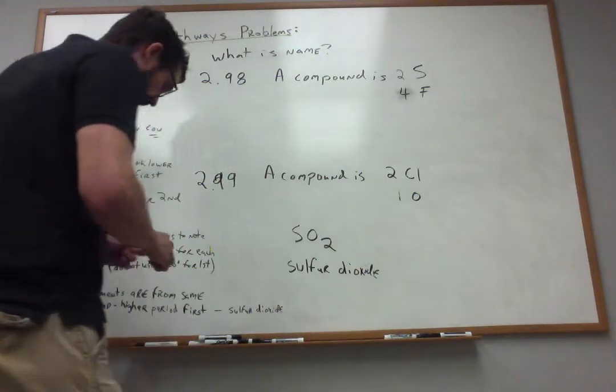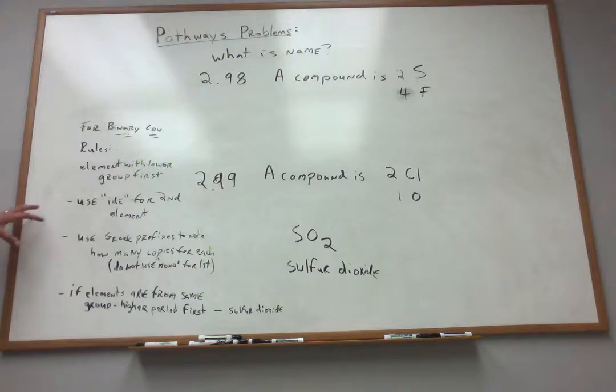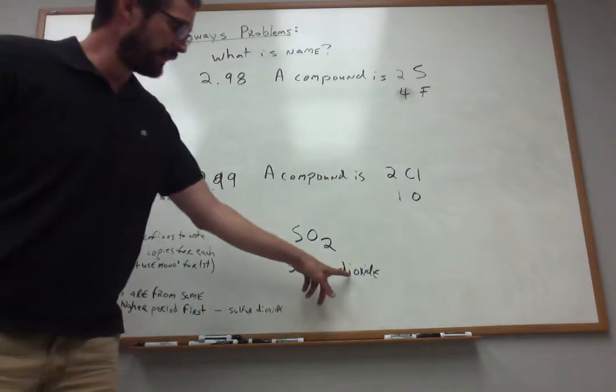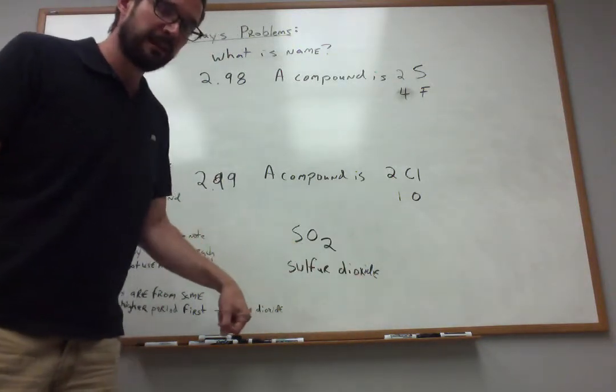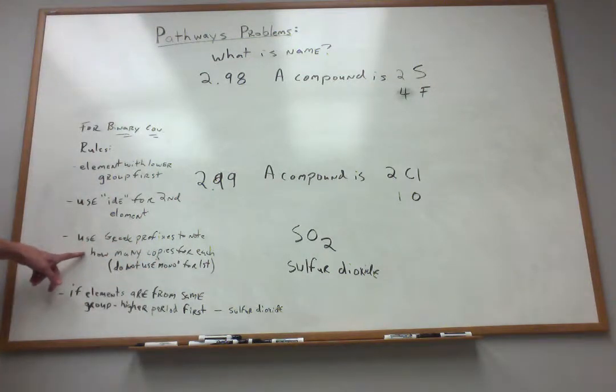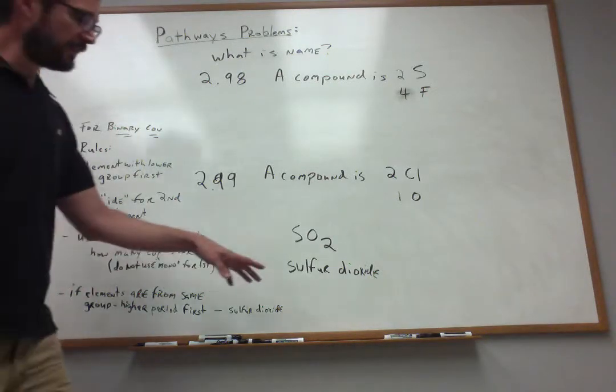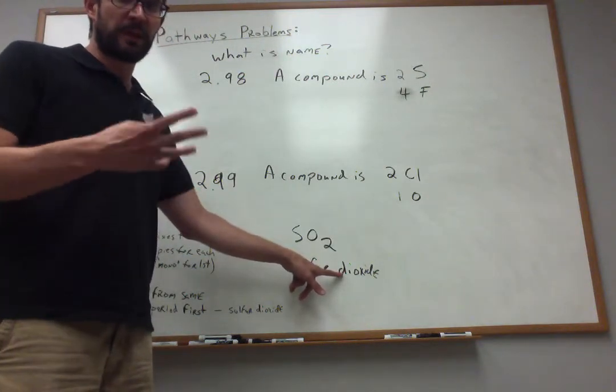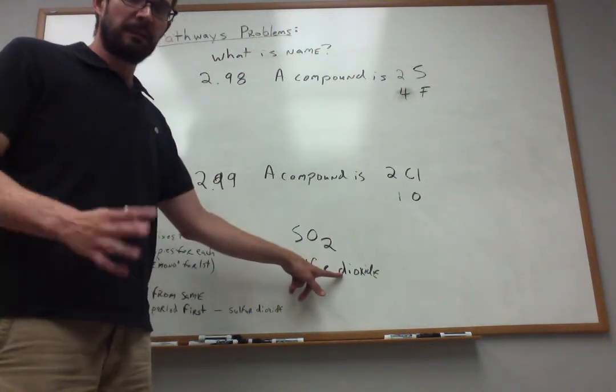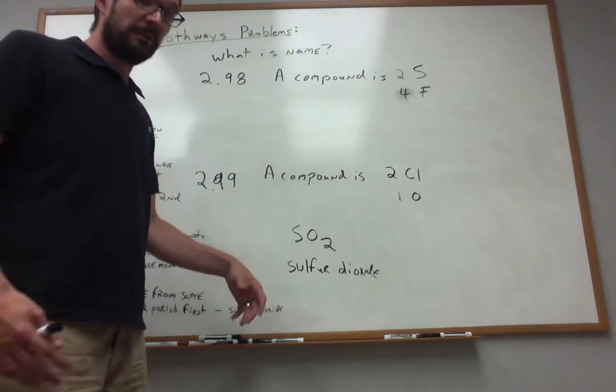So that's an example where you have to make that distinction. But beyond those two rules, we're going to use the IDE ending for the second element. Notice I already did that, right? Dioxide, IDE. And we're also going to use these numerical prefixes to denote how many copies of each molecule, or each atom we've got. So in this case, note the di, di for two, tri for three, tetra for four, penta for five, and so forth. Mono for one.